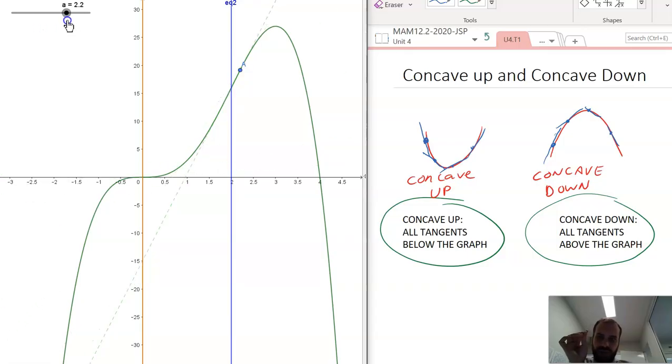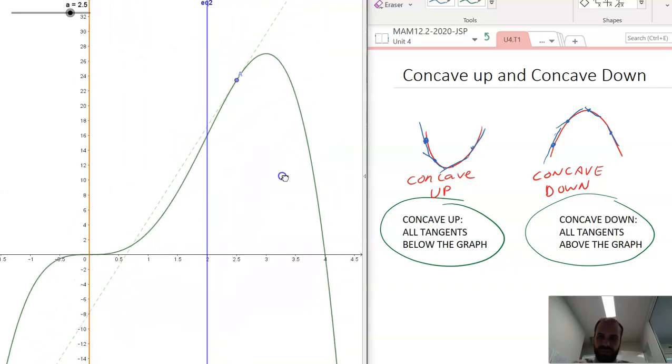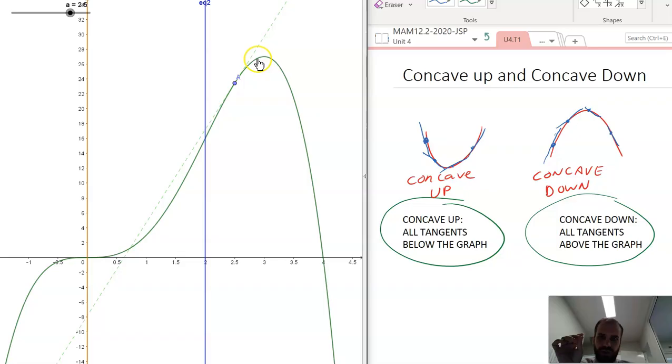And then we come back to here, where the tangent is now above that line. And so that means it's concave down, concave down, and it's going to be concave down forever more.